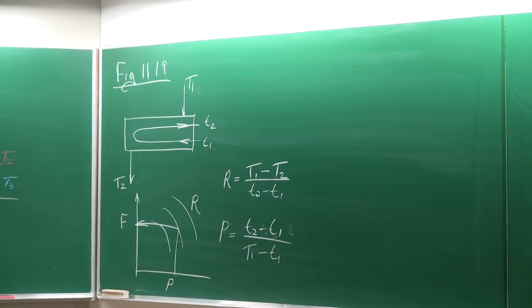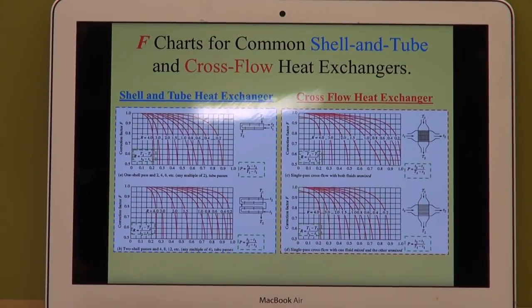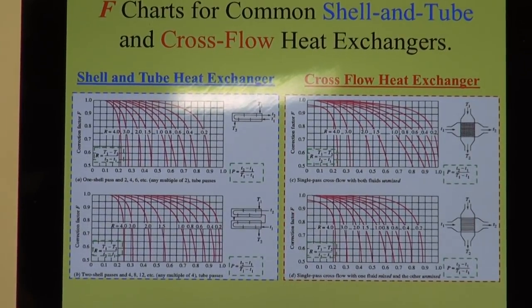In your textbook, Figure 11.19 gives four examples: top-left is a one-shell two-tube-pass shell-and-tube heat exchanger; bottom-left is a two-shell four-tube-pass; and on the right-hand side are two cross-flow heat exchangers — unmixed and mixed. There are many more configurations available in literature if you need other geometries.